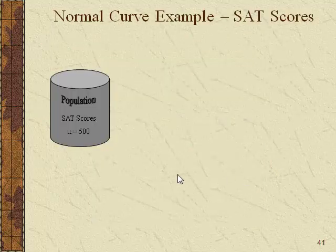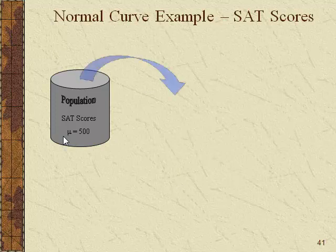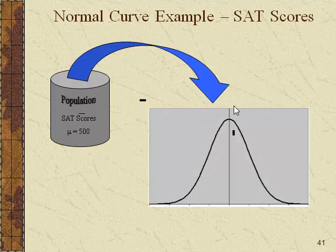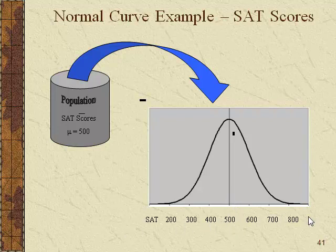Let's work through a more concrete example you might be familiar with: SAT scores. When the SAT is administered to all students seeking to go to college, you're pulling a sample from the population of all possible scores. It's assumed to come in as a normal distribution, set up so that 500 is the average score, with scores going to the left or right. A large proportion of scores are expected to fall between 400 and 600.